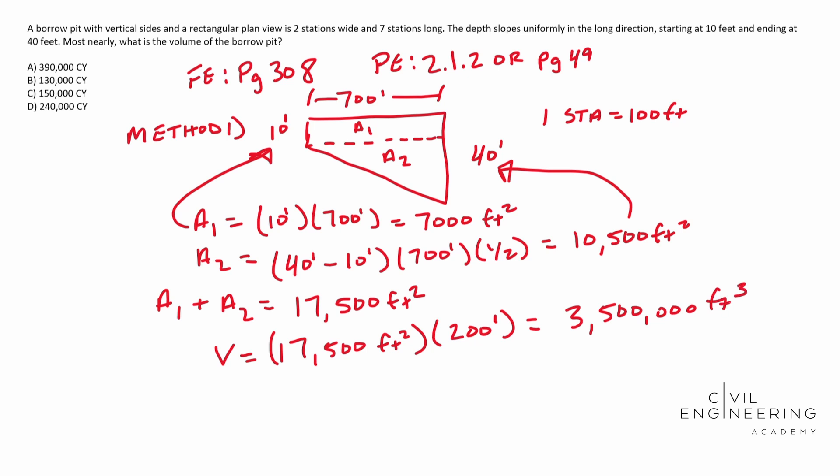So now we need to convert that to cubic yards. And to do that we understand that there are 27 cubic feet in a cubic yard, three times three times three. So with that in mind, we're going to be looking at about 129,629.63 cubic yards. And that looks an awful lot like 130,000 cubic yards. And that is going to be answer B.